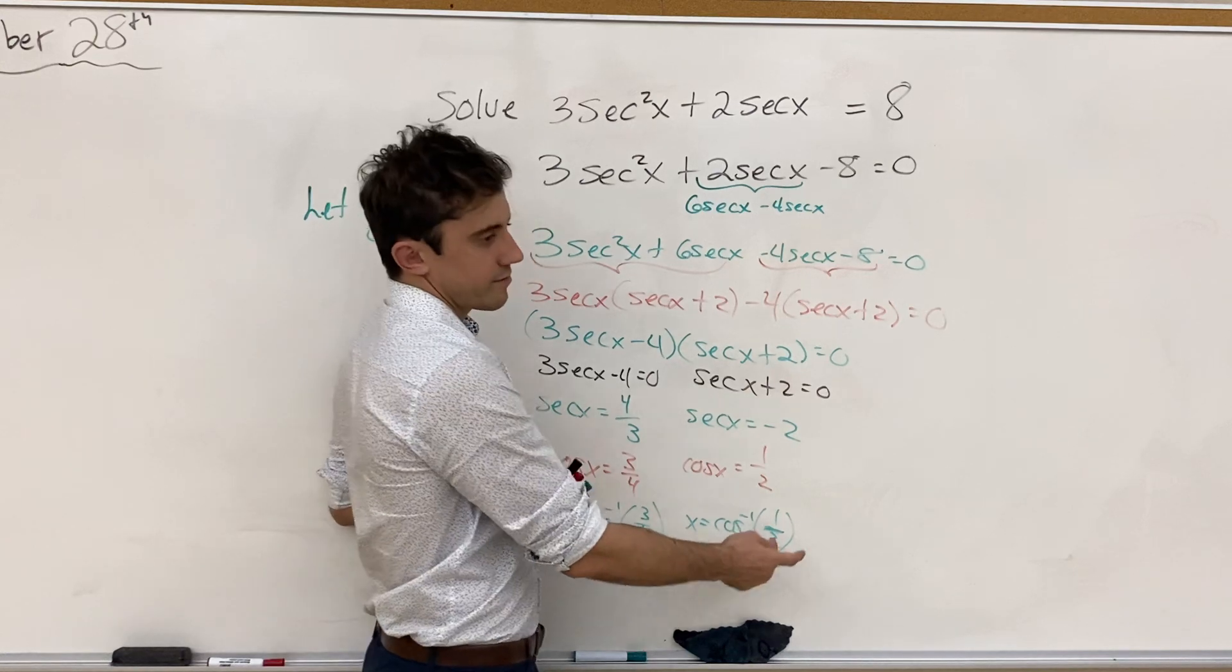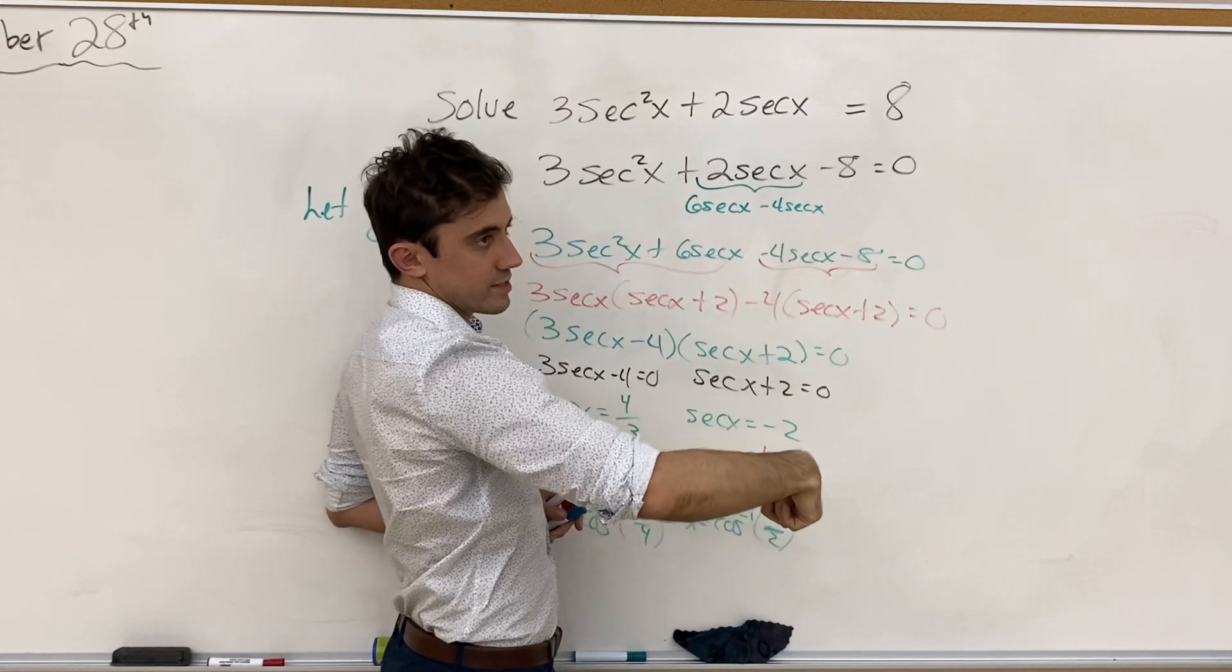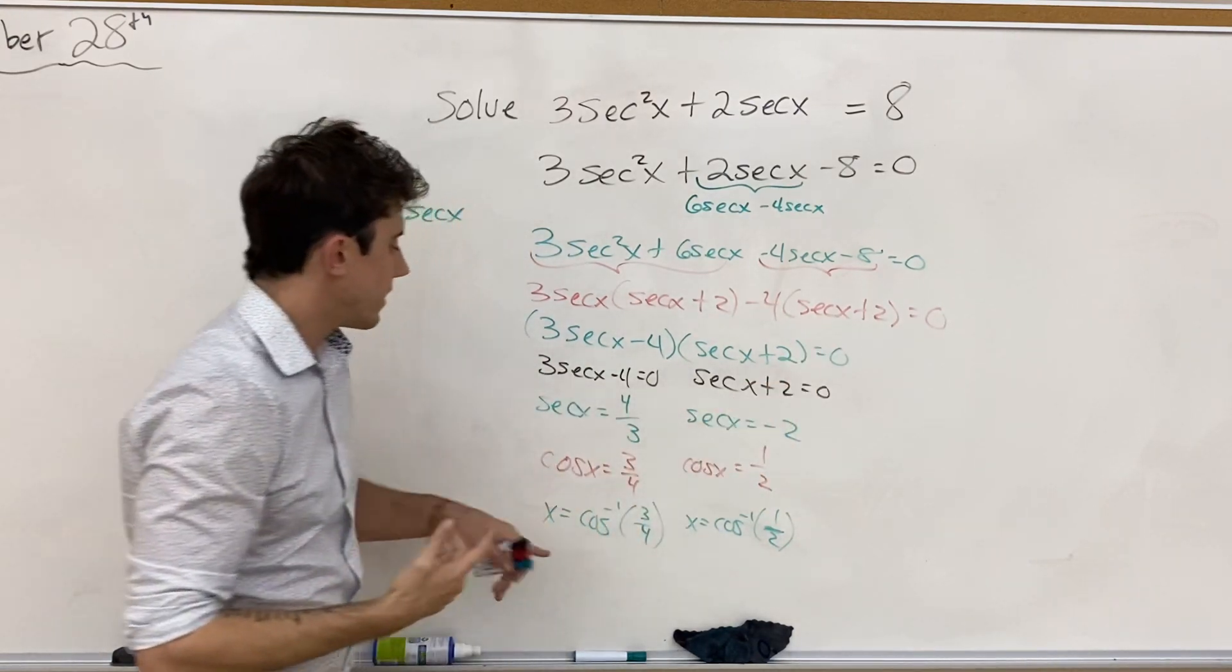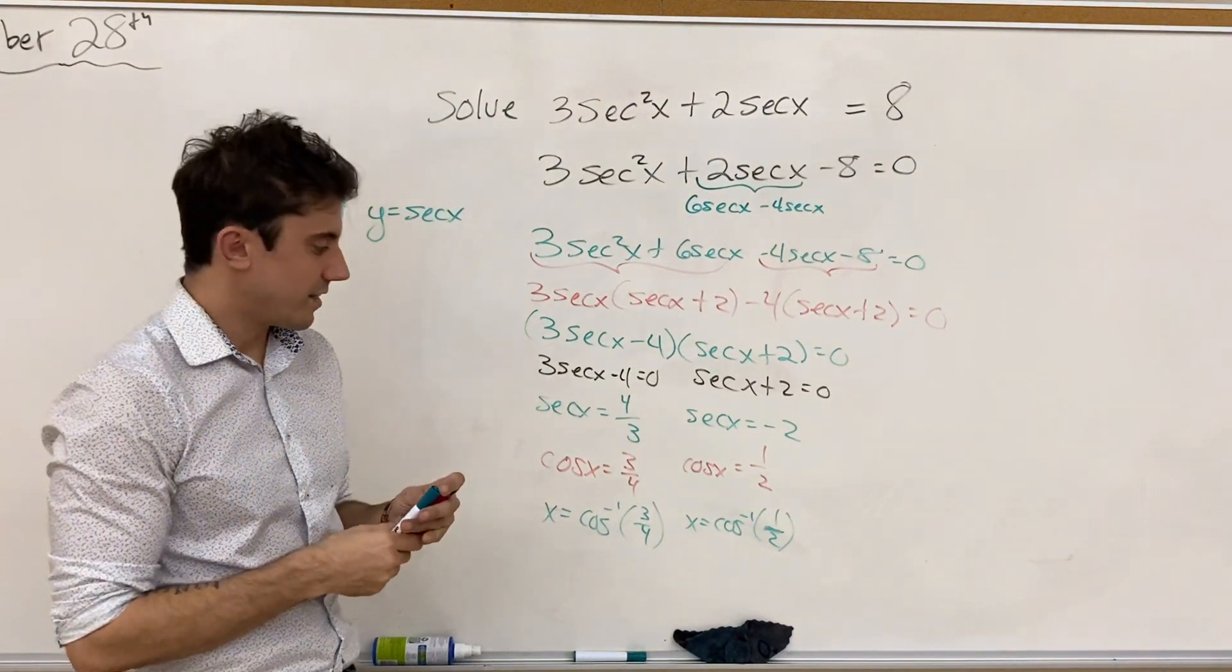The inverse cos of negative 1 half, we have at 120 degrees, so that's 2 pi over 3, and at 240 degrees at 4 pi over 3. And the inverse cos of 3 quarters, that'll be messier values. So I'll leave that to you guys.